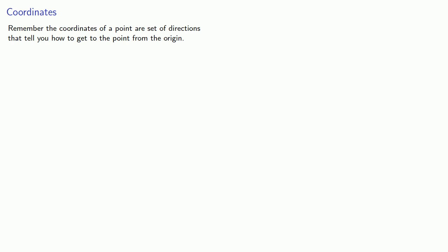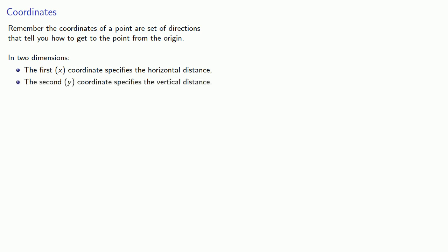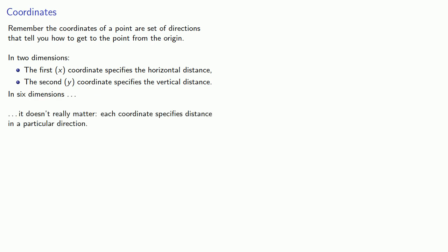Remember, the coordinates of a point are a set of directions that tell you how to get to the point from the origin. So in two dimensions, the first x-coordinate specifies the horizontal distance, and the second y-coordinate specifies the vertical distance. In six dimensions, each coordinate specifies distance in a particular direction.